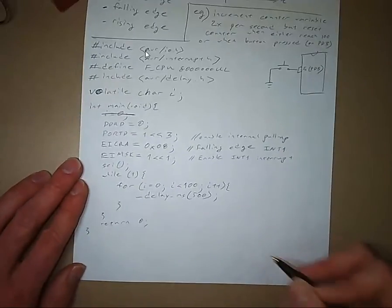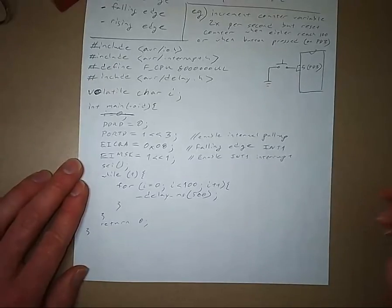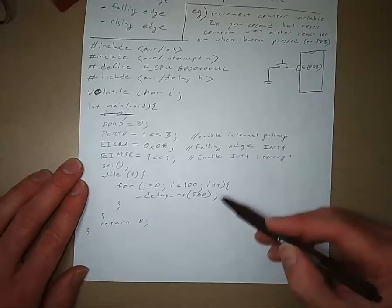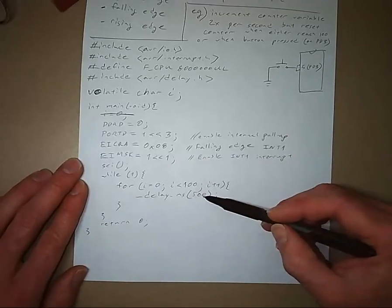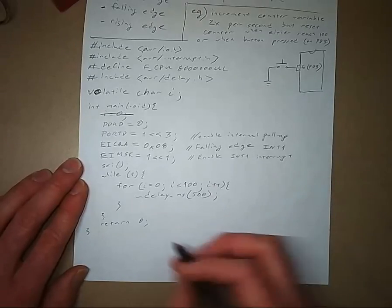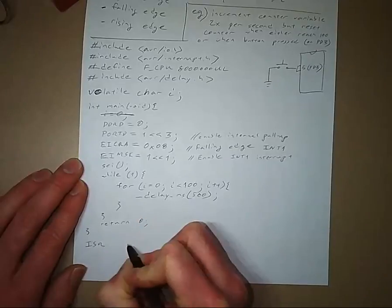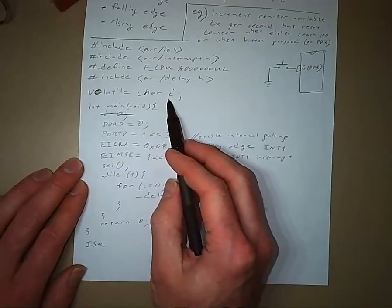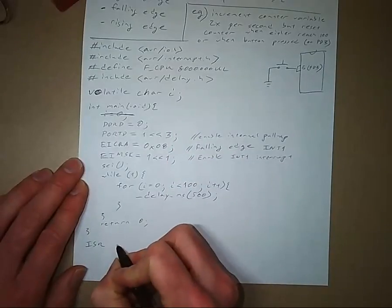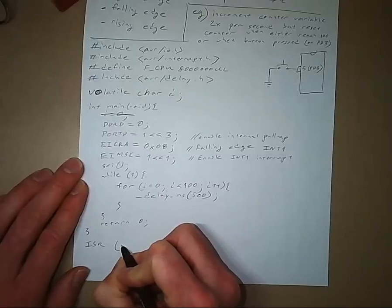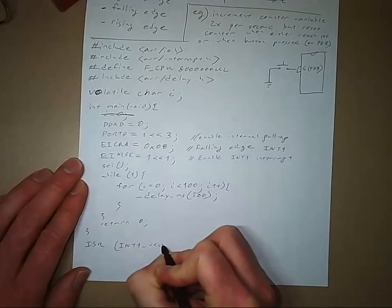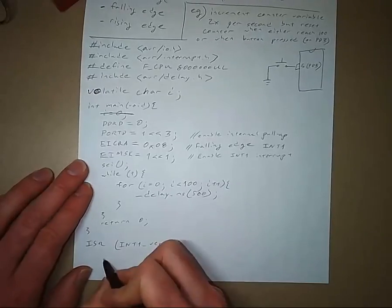And now the other part of our problem description said that we want i to be reset whenever this button is pressed, or when it goes up to 100 so it goes back to zero. When it goes zero to 99, then back to zero and then up to 99. But when a button gets pressed, we want i to go to zero. So we're going to the ISR. And we're about to see why we had declared i as global and why it's a volatile variable. And then the vector name is INT1_VECT. And we got that from the vector table in the datasheet. And all this does is set i equal to zero.